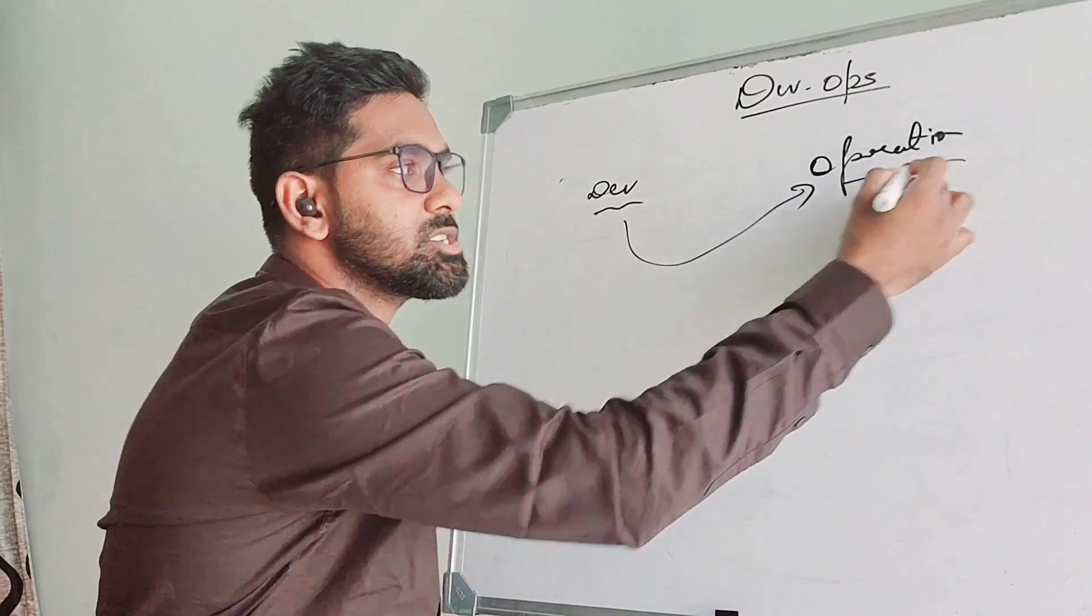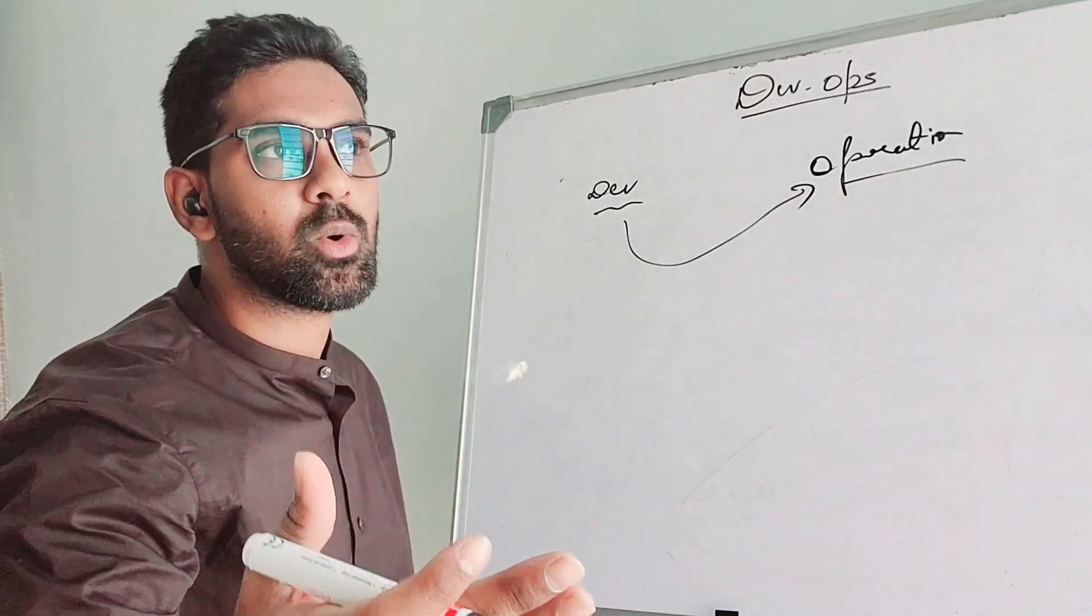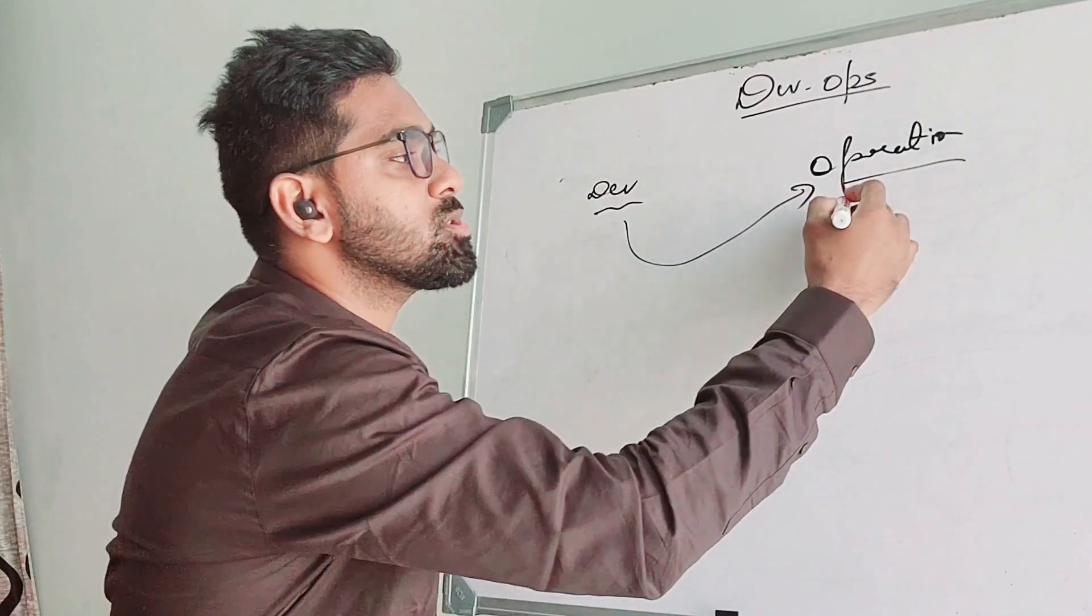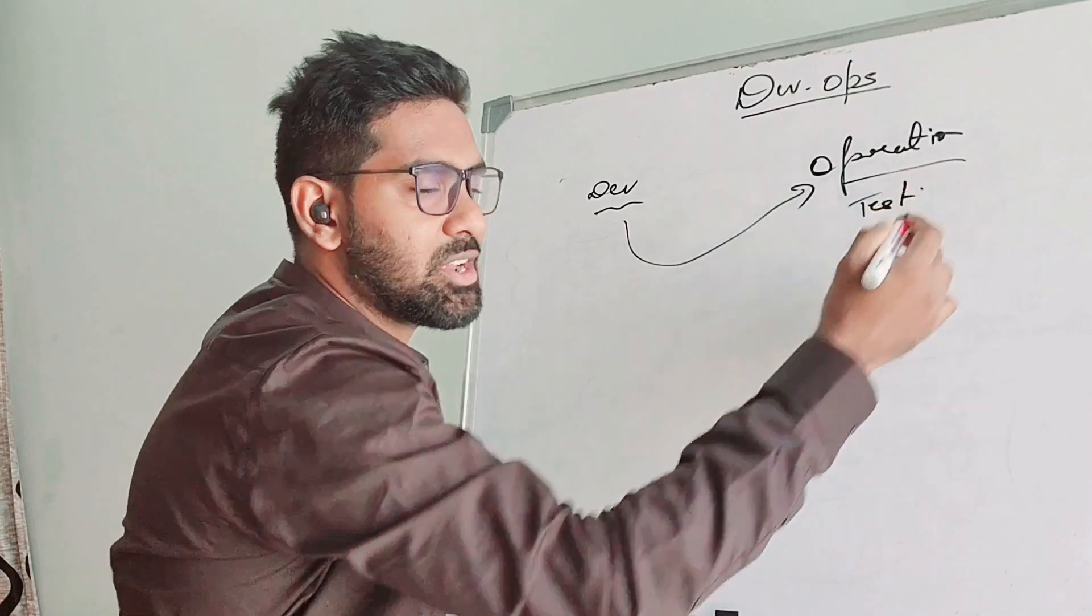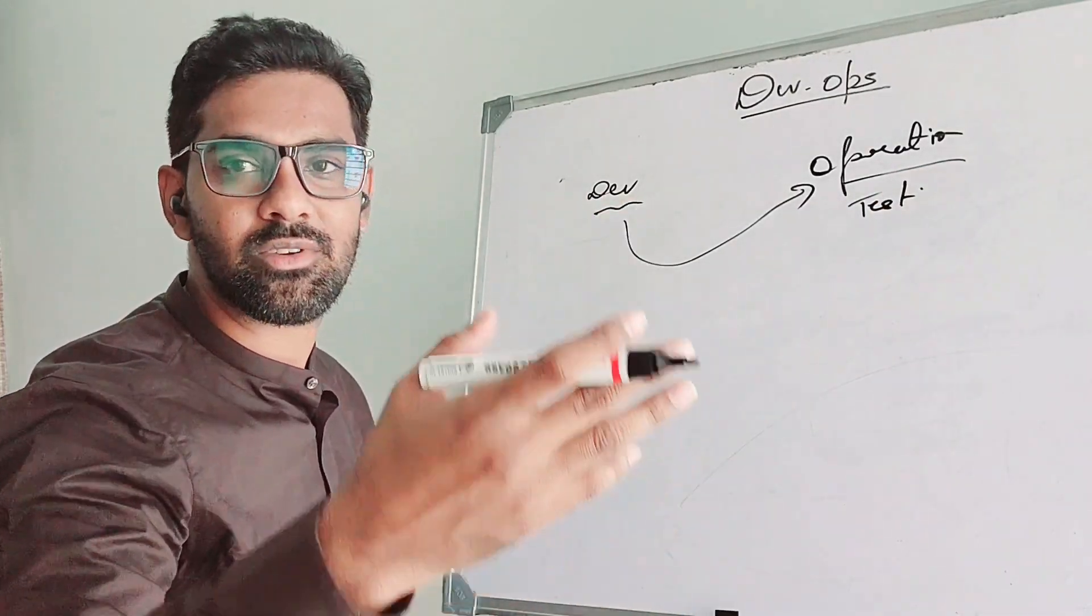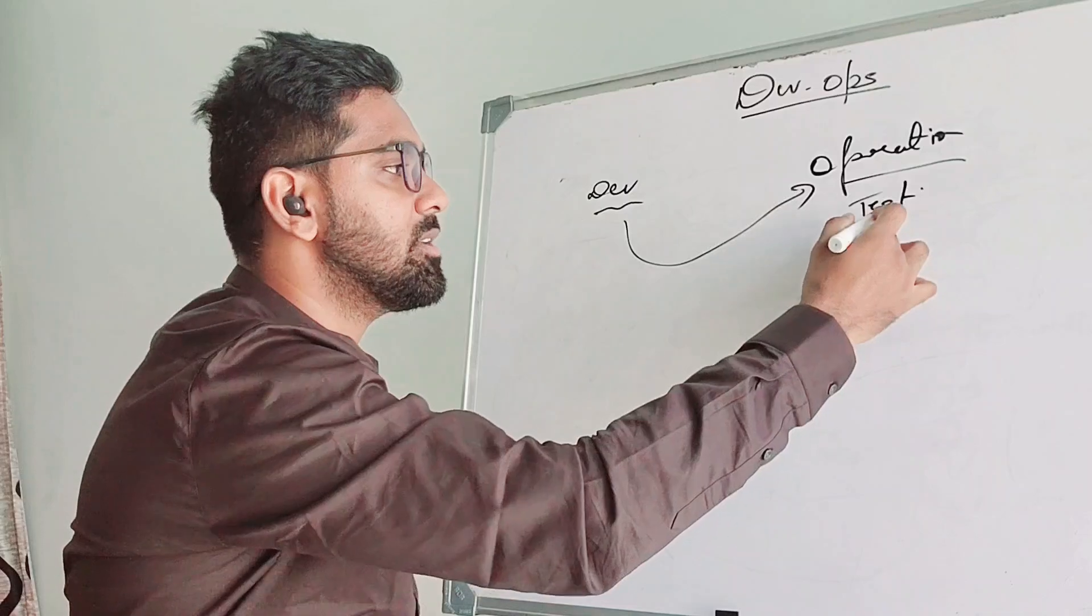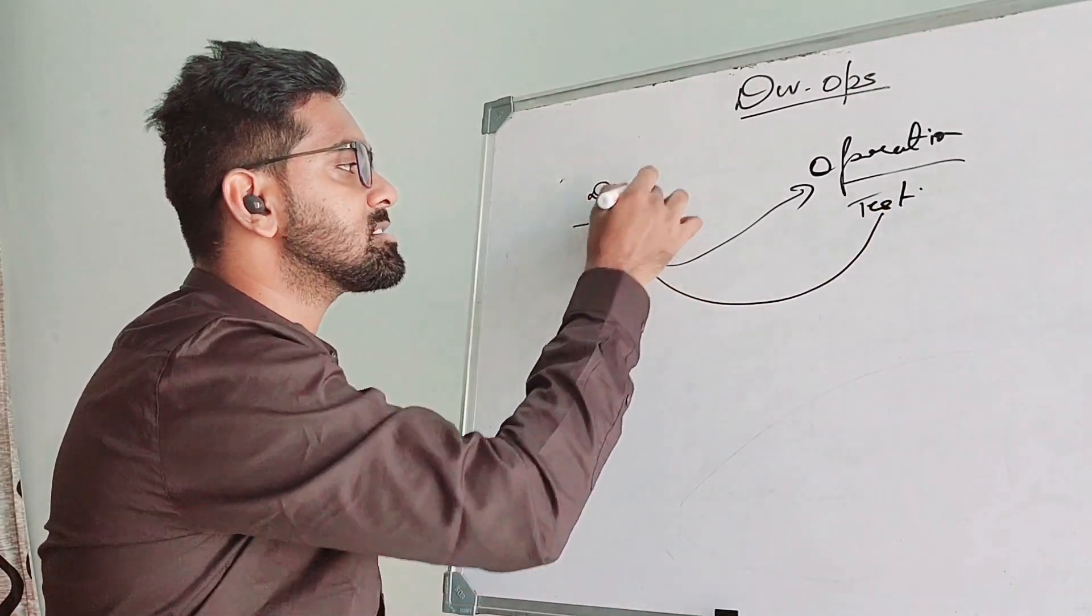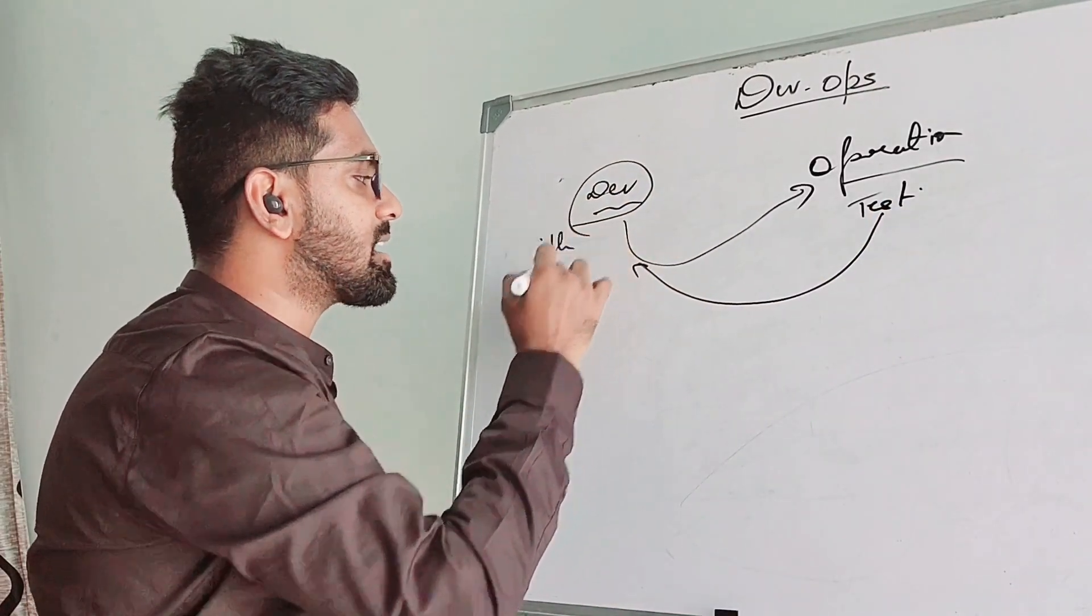Now what happens is the operation team does not directly go and implement that in the production side. They do tests in the dev environment or quality environment, what you call dev and UAT or QAT. They come back with the feedback, and until then the development team is either idle or they have moved to another project.